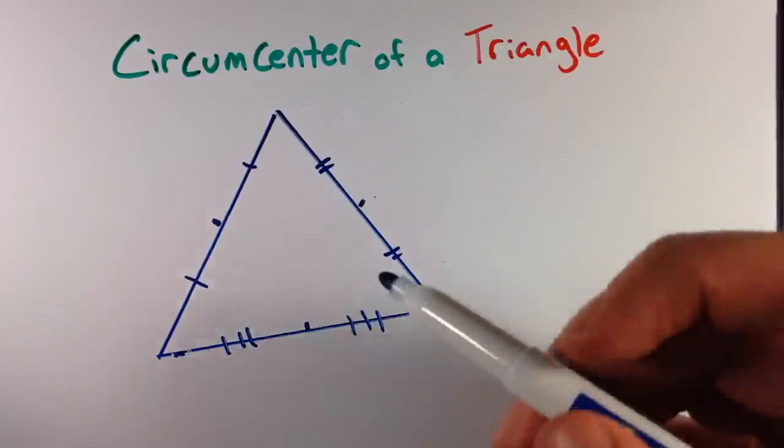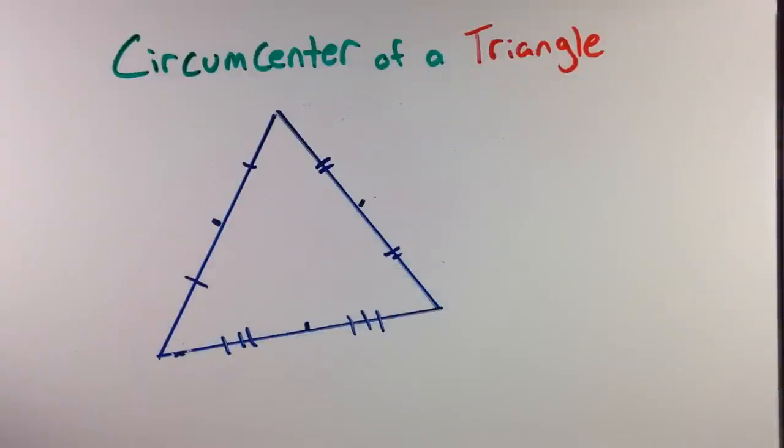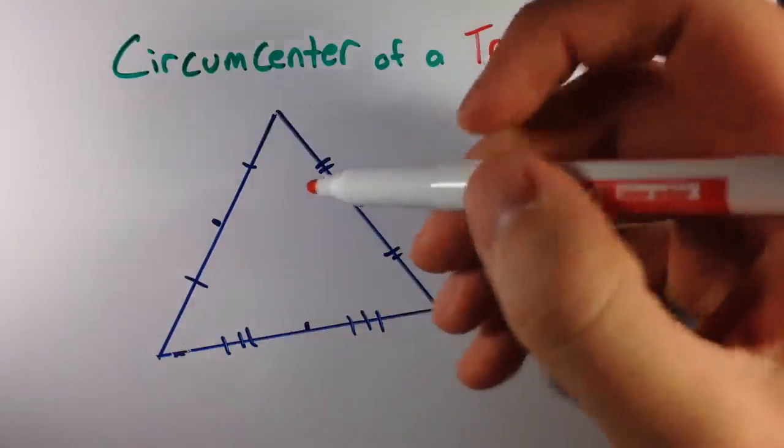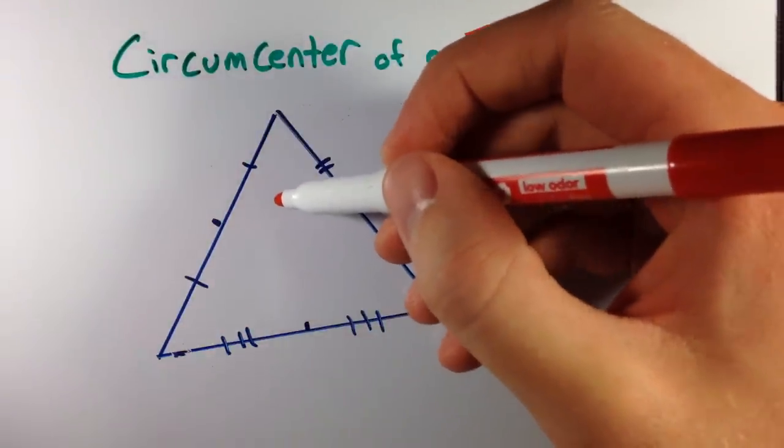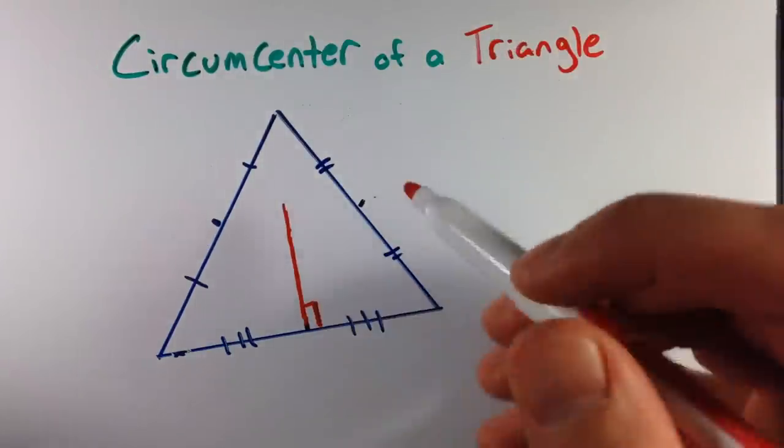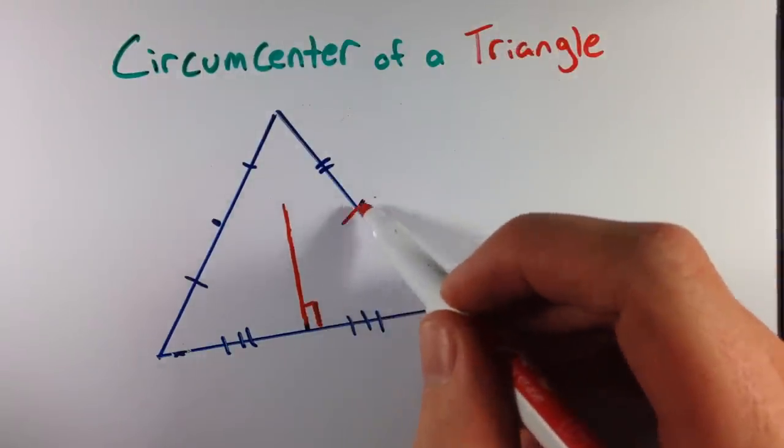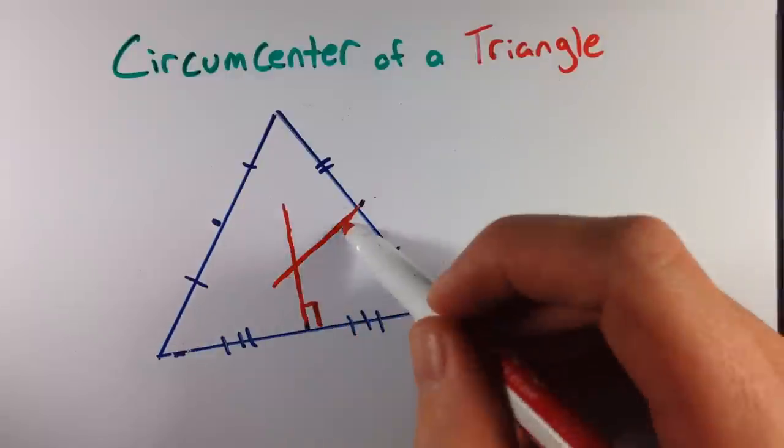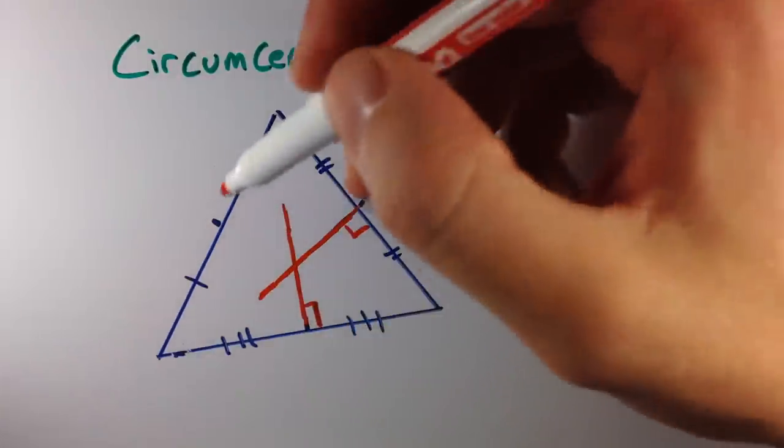Now we would need to find the perpendicular bisector at each midpoint, so we need to find a perpendicular line that comes through each midpoint of each segment.